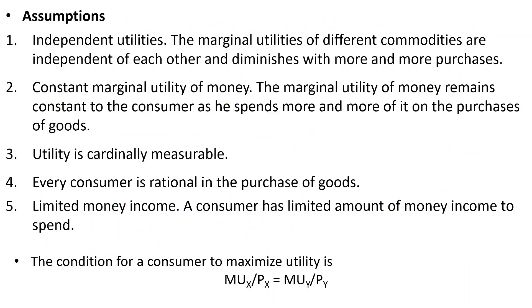Before the example, we will see the assumptions. First is independent utility — the marginal utilities of different commodities are independent of each other and diminish with more and more purchases. As seen in the law of diminishing marginal utility, it applies to individual commodities and marginal utility diminishes with more and more purchases.